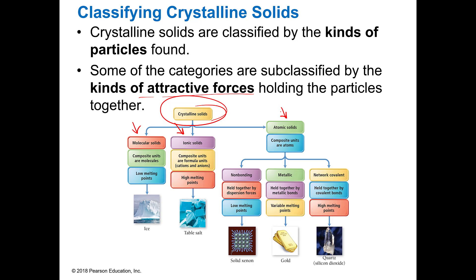Ionic solids are basically just ionic solids — they're composed of ions, cations and anions, and they have super high melting points. Molecular solids are units of molecules and they usually have low melting points. Atomic solids, however, can have different types of intermolecular forces, and so you can have a non-bonding type or a metallic type, and then you can have network covalent.